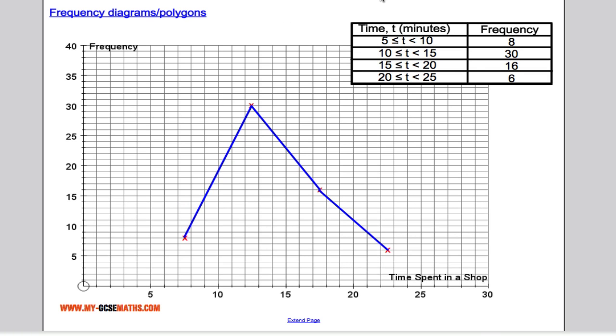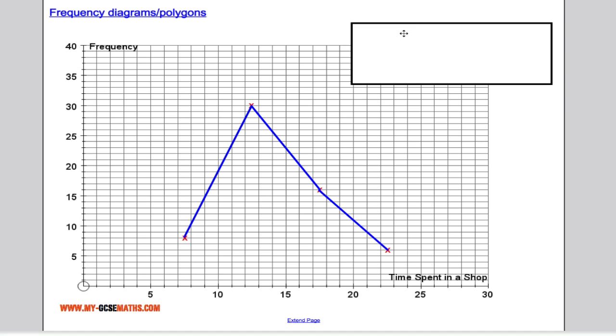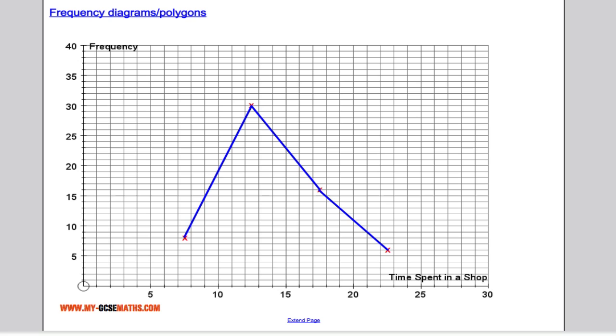One other possible thing we could be asked to do is to use a frequency polygon and estimate the median. Now if you've watched the video on how to estimate the median, working out the median from a table, it's just like that. But we won't be given the table. So suppose we don't have the table here.